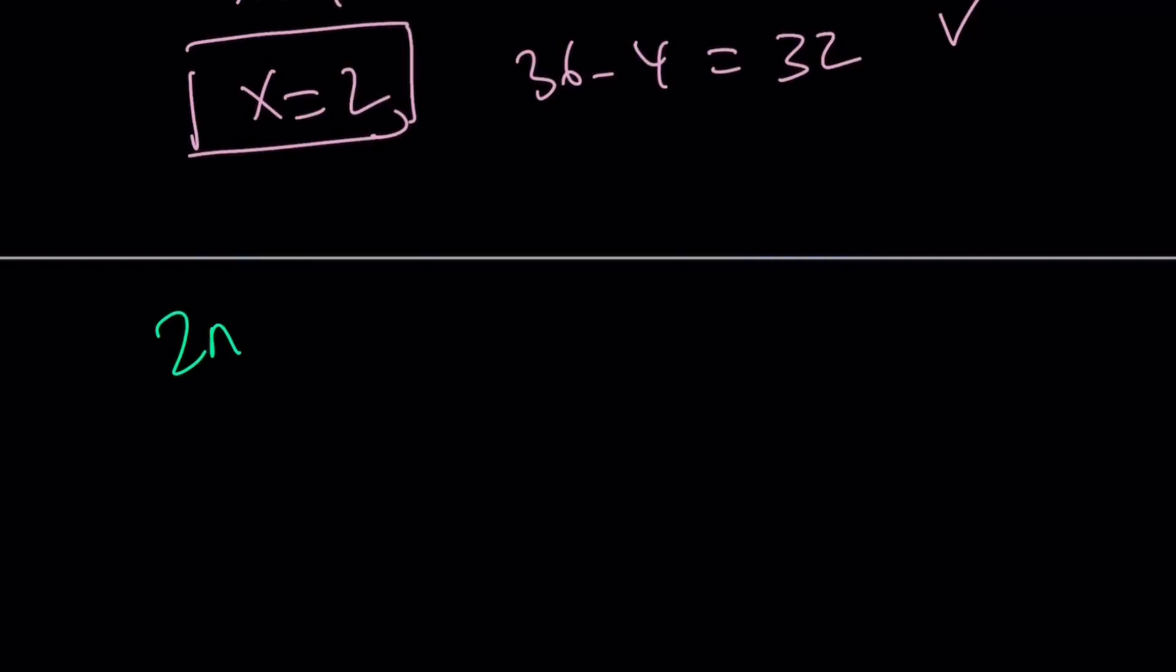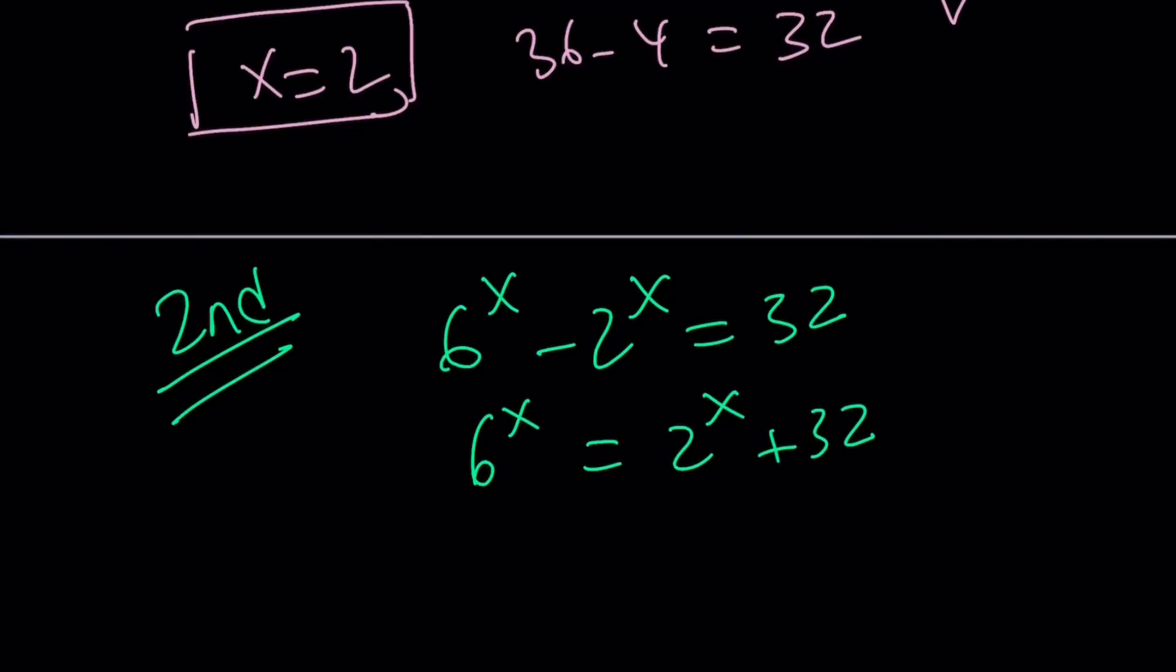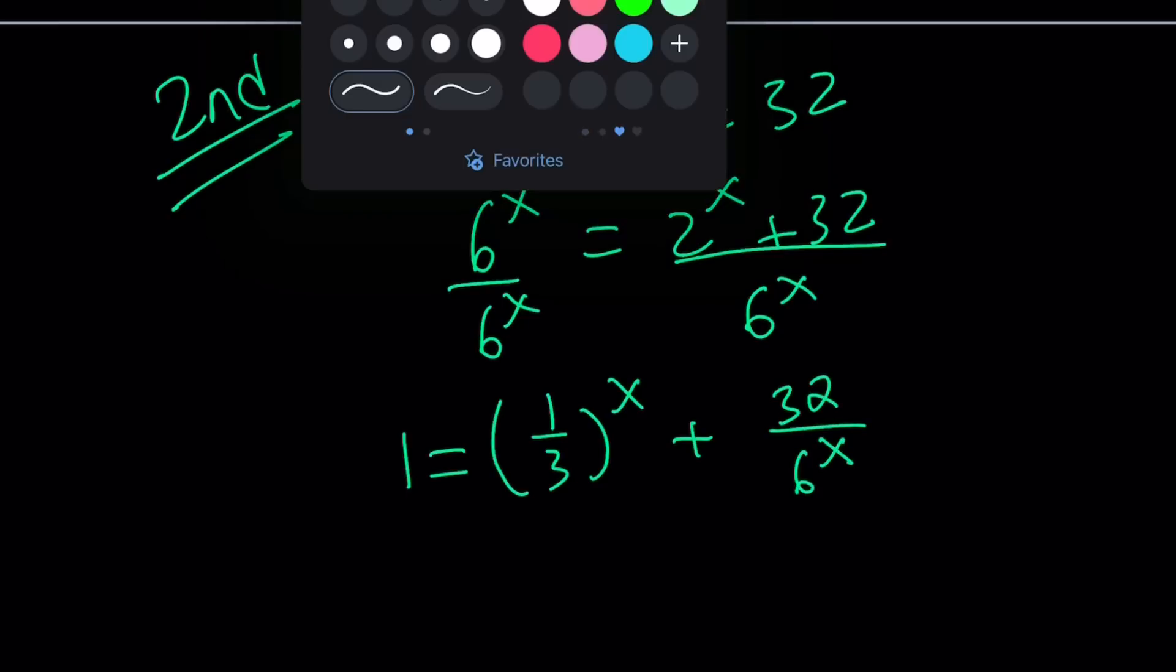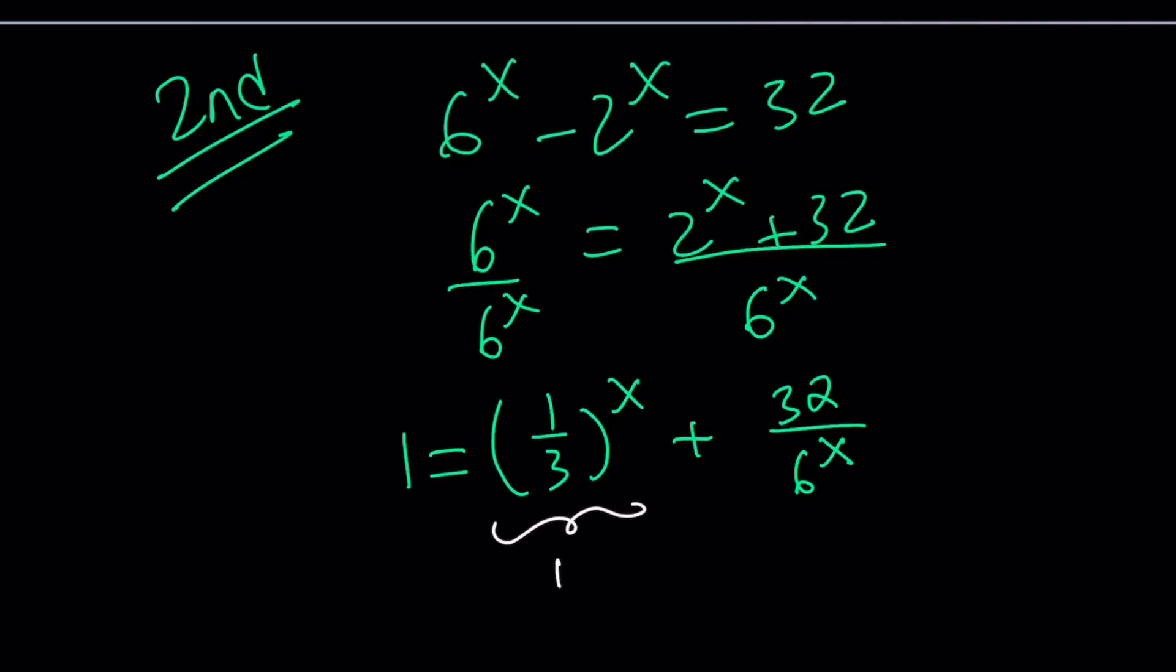Let's go ahead and take a look at the second approach. So I'm going to rewrite my equation. Add 2 to the x to both sides. So all this effort was to prove that there's only one solution, and then we guessed and checked. Now, second approach, divide both sides by 6 to the x, which is the largest power, divide by 6 to the x, divide by 6 to the x. You get 1 equals 2 over 6, which is 1 third to the power x, plus 32 over 6 to the power x. Now notice that this is, you notice that this is a decreasing function, and this is also a decreasing function.